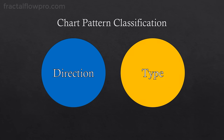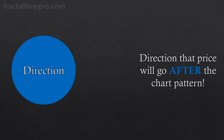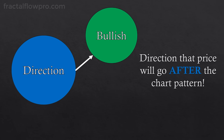The chart patterns are classified by direction and type. The direction classification relates to the direction that price is supposed to go after the pattern. Since we are talking about price charts, there are only two directions that price can go, meaning that it can either go up or it can go down after the pattern. When the chart pattern implies that price will go up after the pattern, we classify it as a bullish pattern.